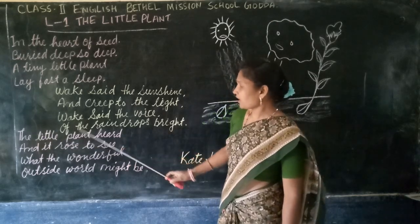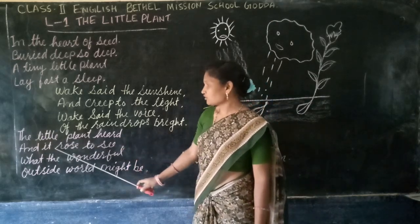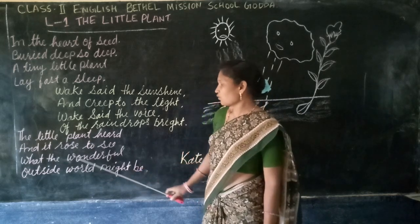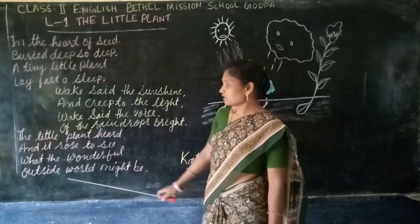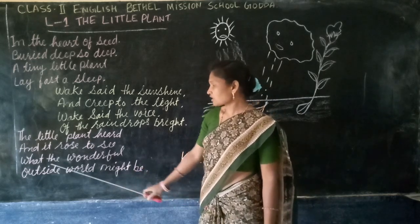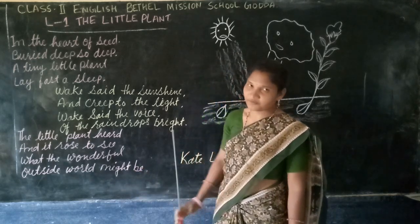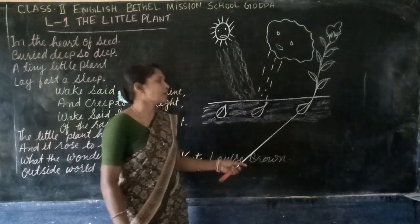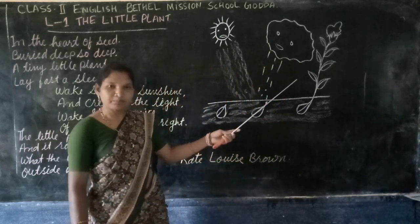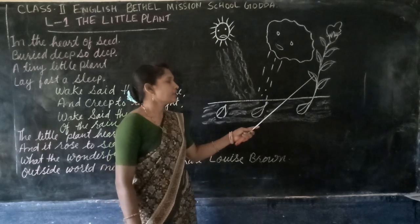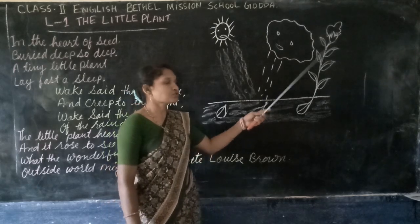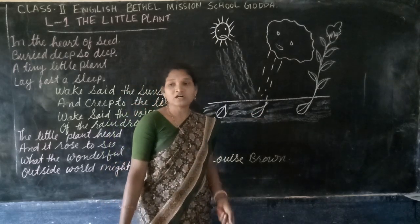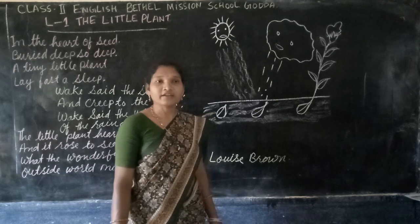The last stanza says: 'The little plant stirred beneath the earth and it rose to see what the wonderful outside world might be.' And finally, the seed has grown into a big plant and it rose to see the environment, the world and the nature.